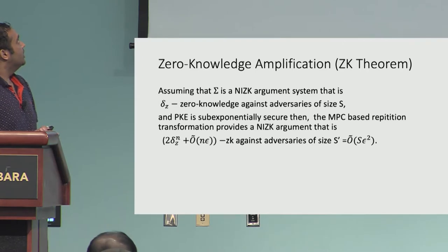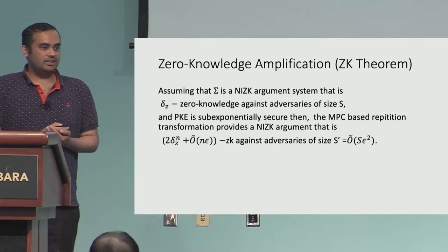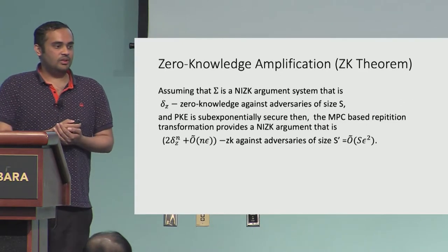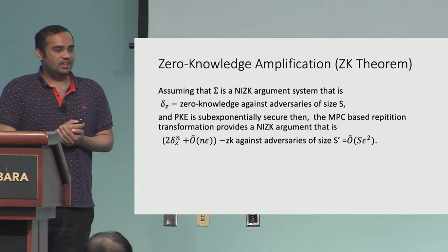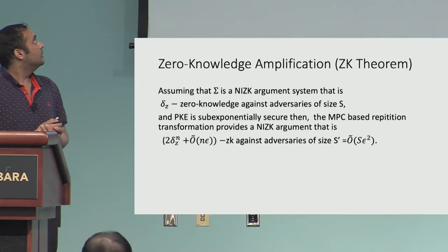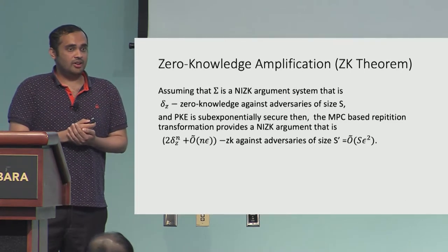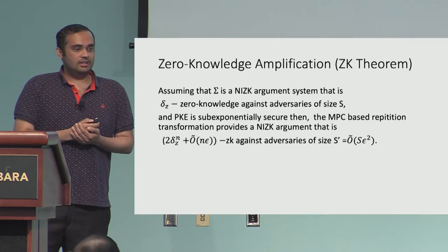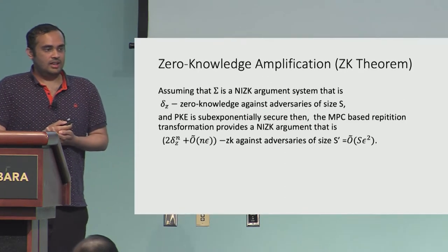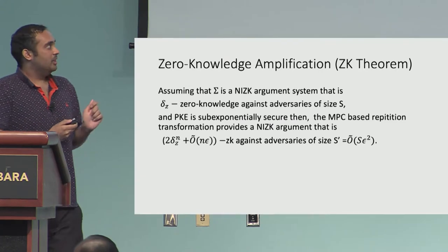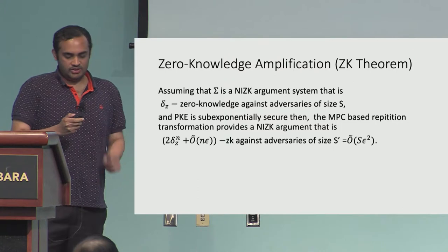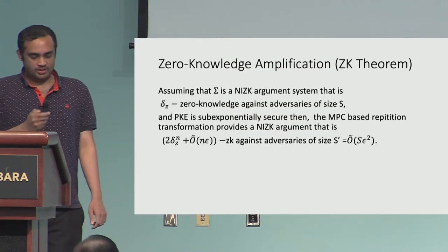This is the main theorem for zero knowledge amplification. If we started with δZ zero knowledge, assuming sub-exponentially secure public key encryption, what we get is 2·δZ^N plus O(N·ε) zero knowledge property against circuits of slightly smaller size. The factor of two comes because we first argue witness indistinguishability and then argue zero knowledge, giving a factor-of-two loss.